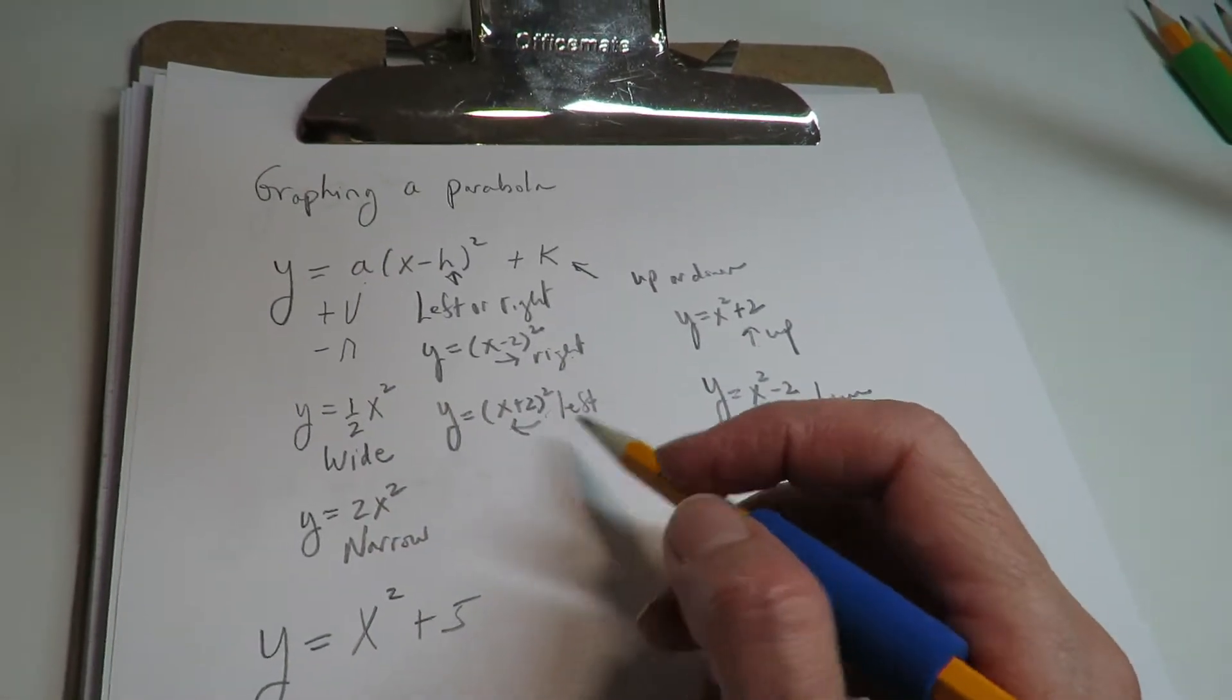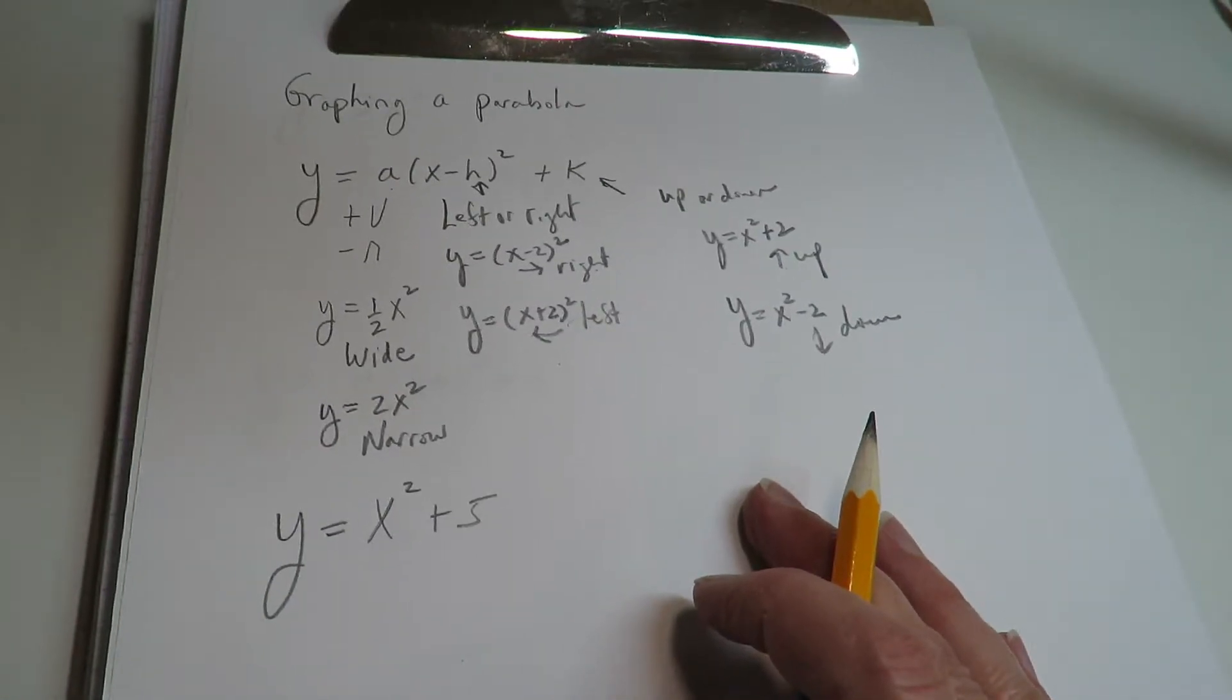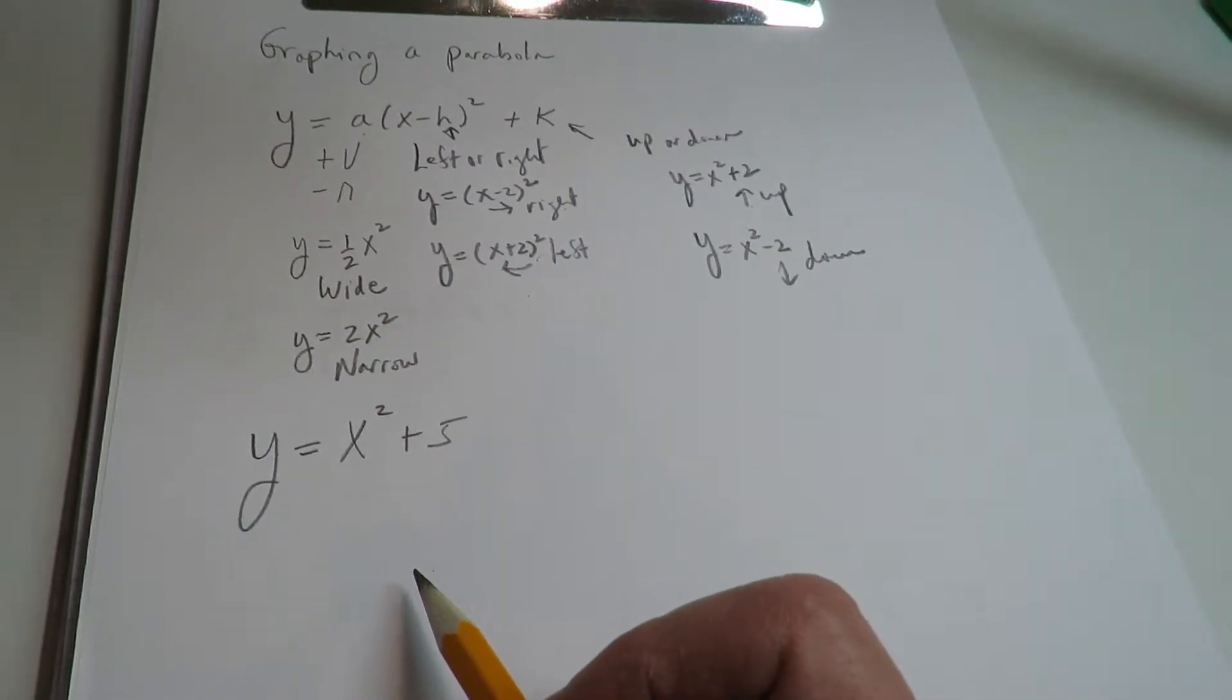All right, so those are general rules. You can go back and check them out in the lecture. But that's the gist of it. So you just have to be able to look at something and be able to tell which way it's going.